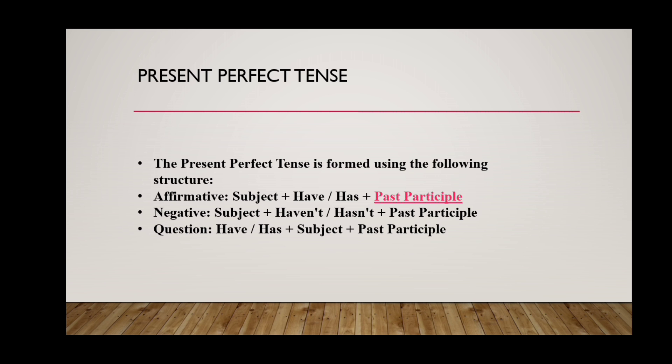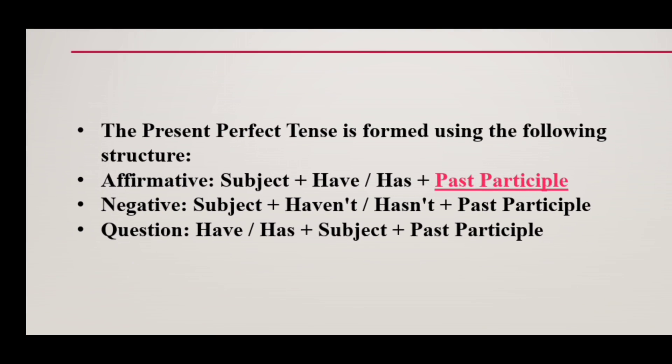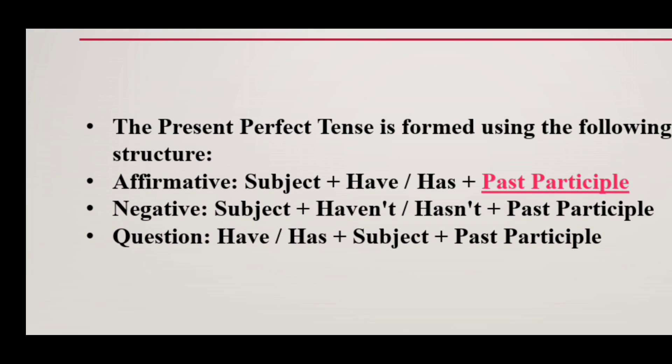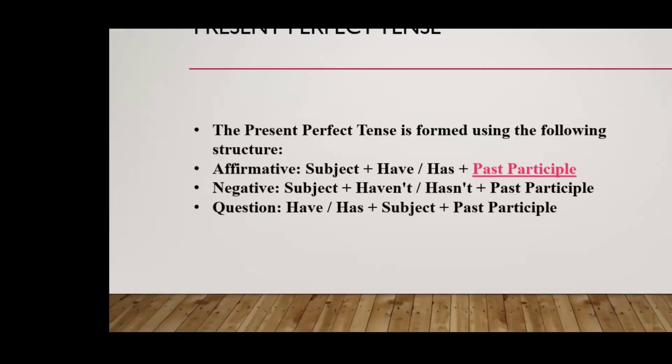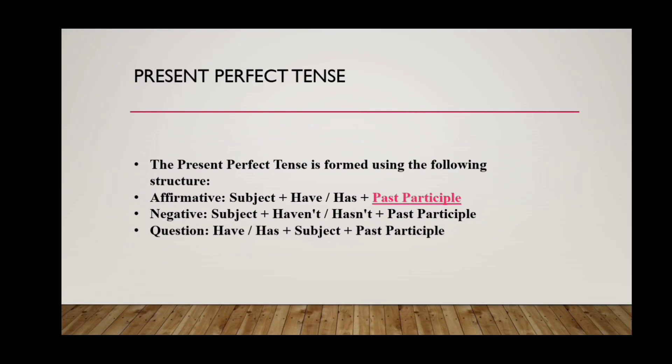The next one is present perfect tense. The structure for an affirmative sentence is: subject plus have or has plus past participle form or V3. Has is used with the third person singular number. For a negative sentence: subject plus have not or has not plus V3 or past participle form. For an interrogative sentence: have or has plus subject plus V3, the past participle form. That is the structure of present perfect tense.